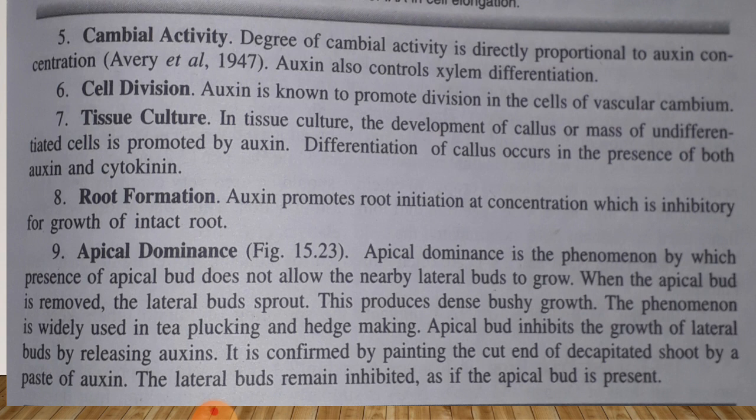Apical dominance is the phenomenon by which the presence of the apical bud does not allow the nearby lateral buds to grow. When the apical bud is removed, the lateral buds sprout and this produces a bushy growth. This phenomenon is widely used in tea plucking and hedge making. Auxin inhibits the growth of lateral buds, confirmed by replacing the cut end of the decapitated shoot with a paste of auxin — the lateral buds remain inhibited as if the apical bud is present. So auxin plays an important role in apical dominance. Dear students, I hope you understand. Thanks.